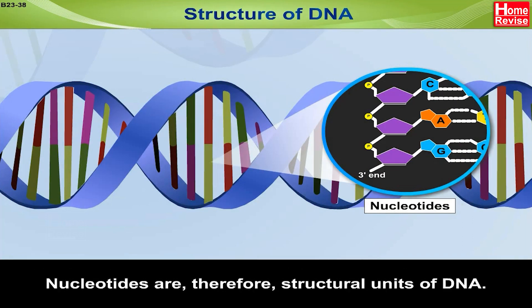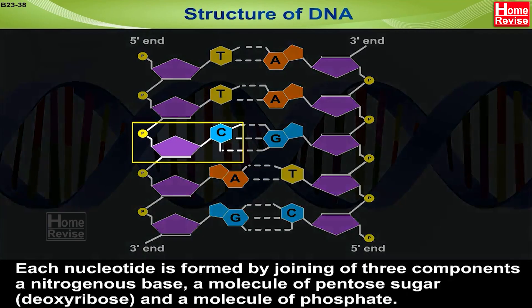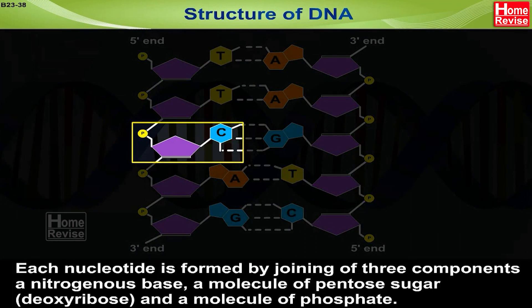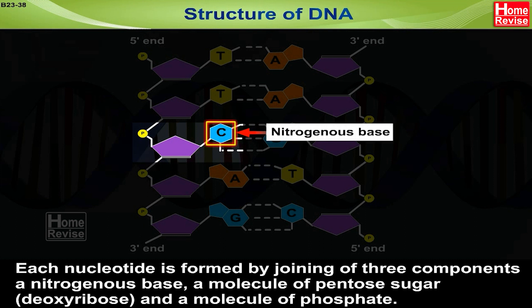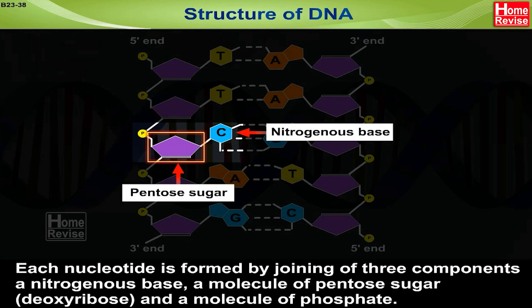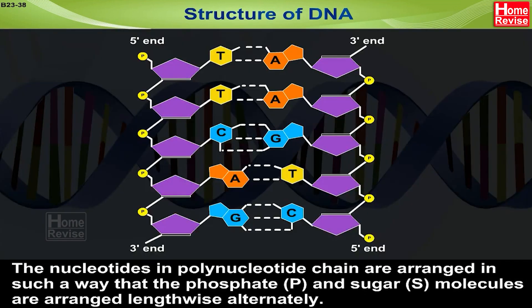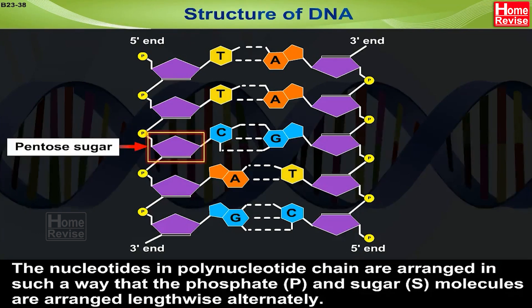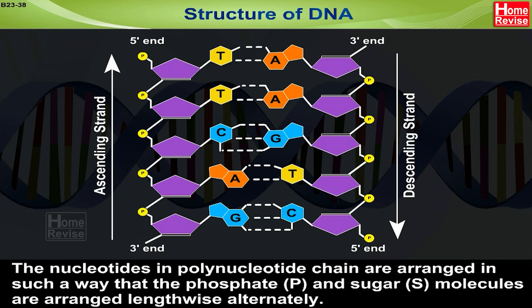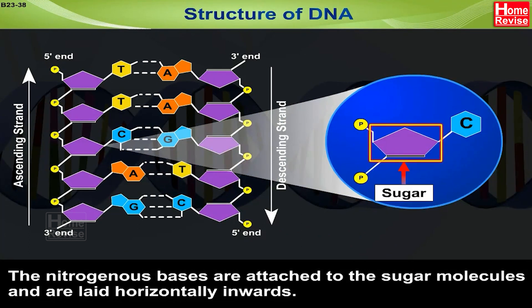Nucleotides are therefore the structural units of DNA. Each nucleotide is formed by joining of three components. The nucleotides are arranged so that the phosphate (P) and sugar (S) molecules are arranged lengthwise alternately. The nitrogenous bases are attached to the sugar molecules and are laid horizontally, inwards.